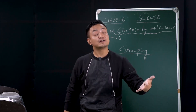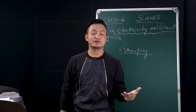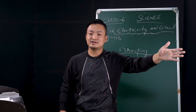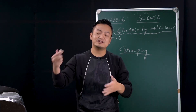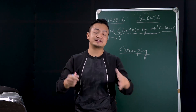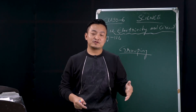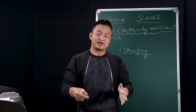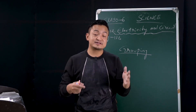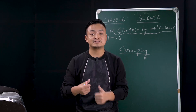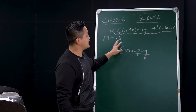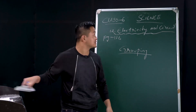If you ask for any medicine starting with D, the chemist knows it's placed on this side. If you ask for any medicine starting with J or L, they know where it is placed. So grouping of objects and materials is very important and helpful. Now we'll start with Electricity and Circuit.